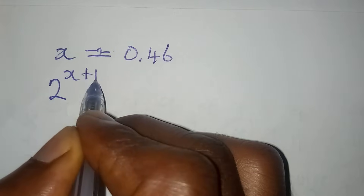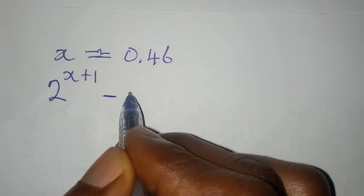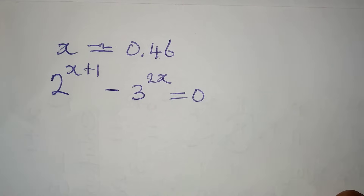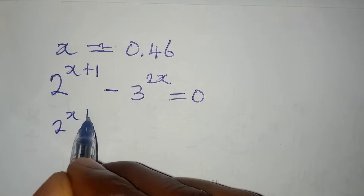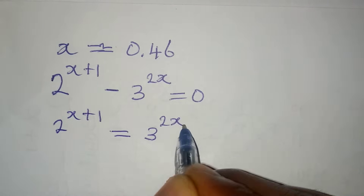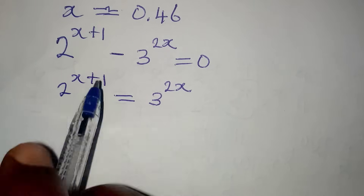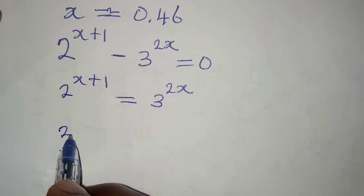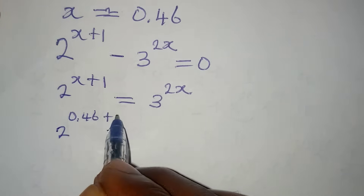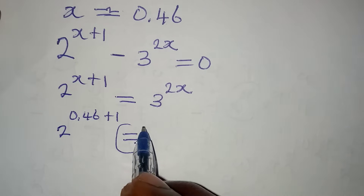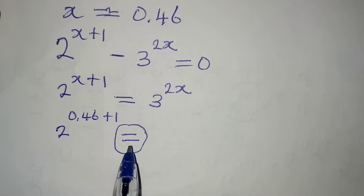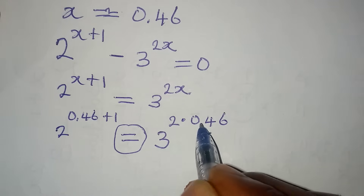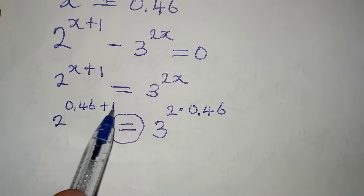Let's check to see if we are right. The original equation is 2 to the power of x plus 1, minus 3 to the power of 2x, equal to 0. Our first step was 2 to the power of x plus 1 equals 3 to the power of 2x. With x equal to 0.46, we get 2 to the power of 0.46 plus 1, which should equal 3 to the power of 2 times 0.46. Adding the power gives 2 to the power of 1.46.